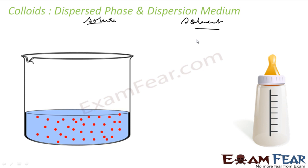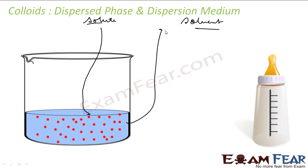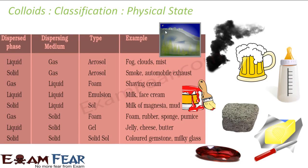Based on the dispersed phase and dispersion medium, colloids are classified into different types — similar to how solutions are classified into nine types based on the physical state of solute and solvent. For colloids, we get only eight classifications, not nine, because gas in gas is not possible — both gases would simply form a solution.